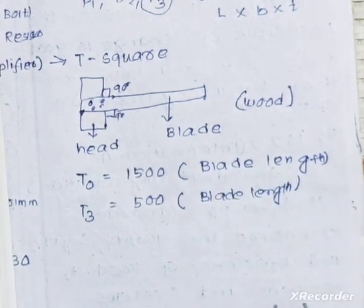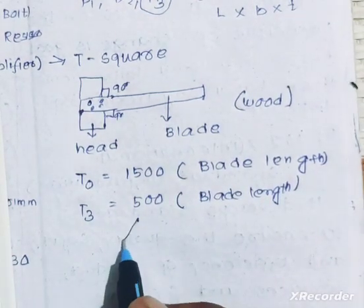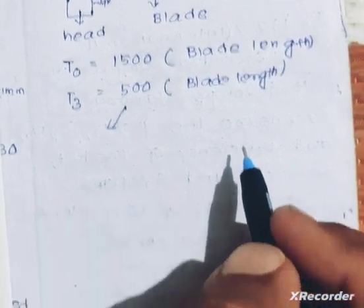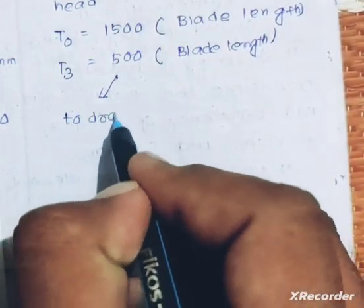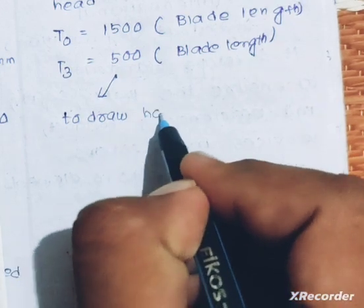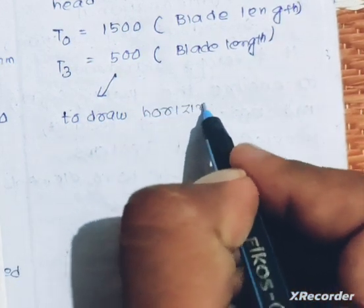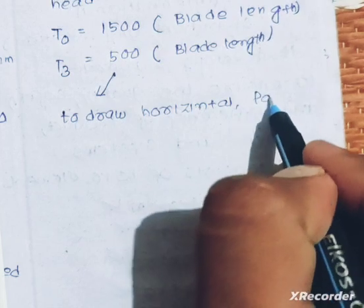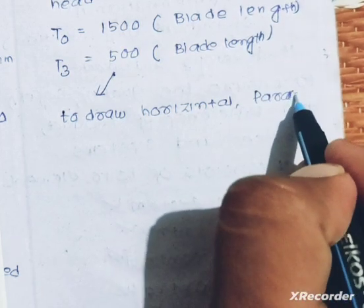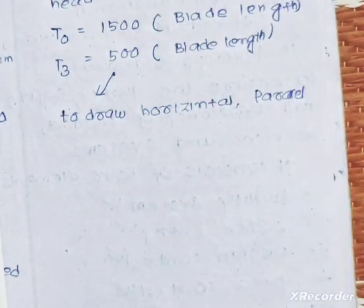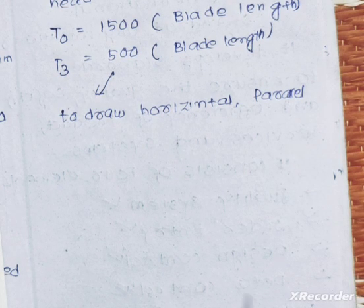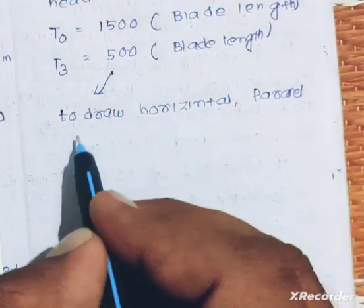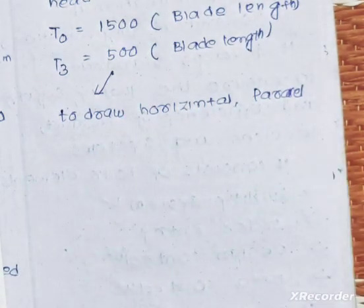What is T2? This is the T-square used to draw horizontal lines and parallel lines. I will complete this lecture.